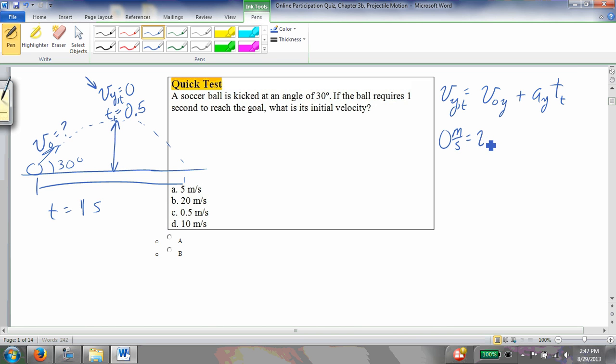Equals v_not_y, I'm going to change that in just a second, plus minus 9.8 meters per second squared, times t at the top, which I know is 0.5 seconds. So that tells me then that v_not_y is equal to positive 4.9 meters per second.